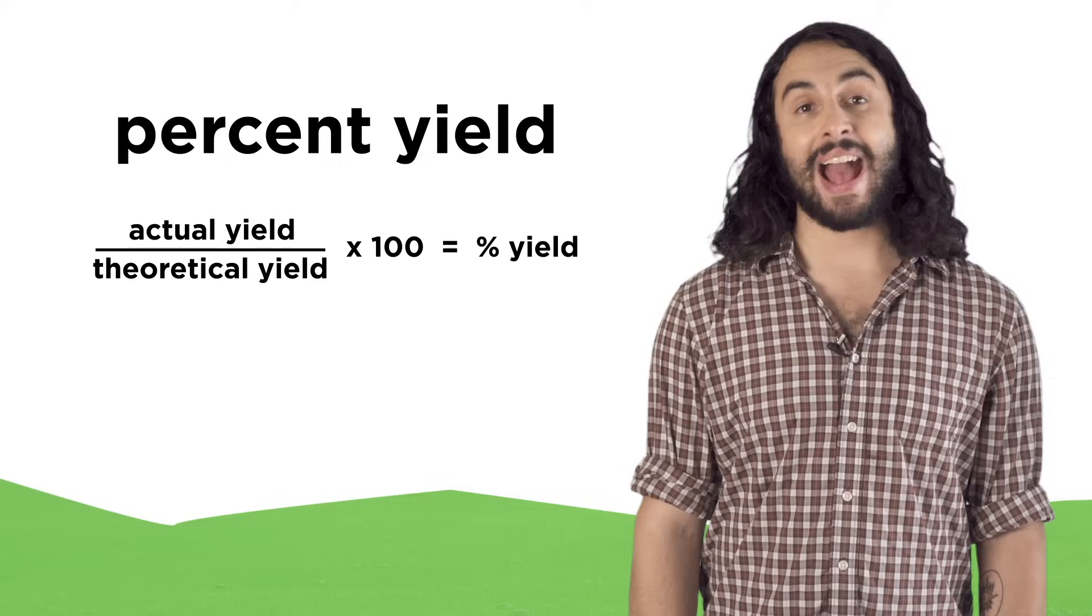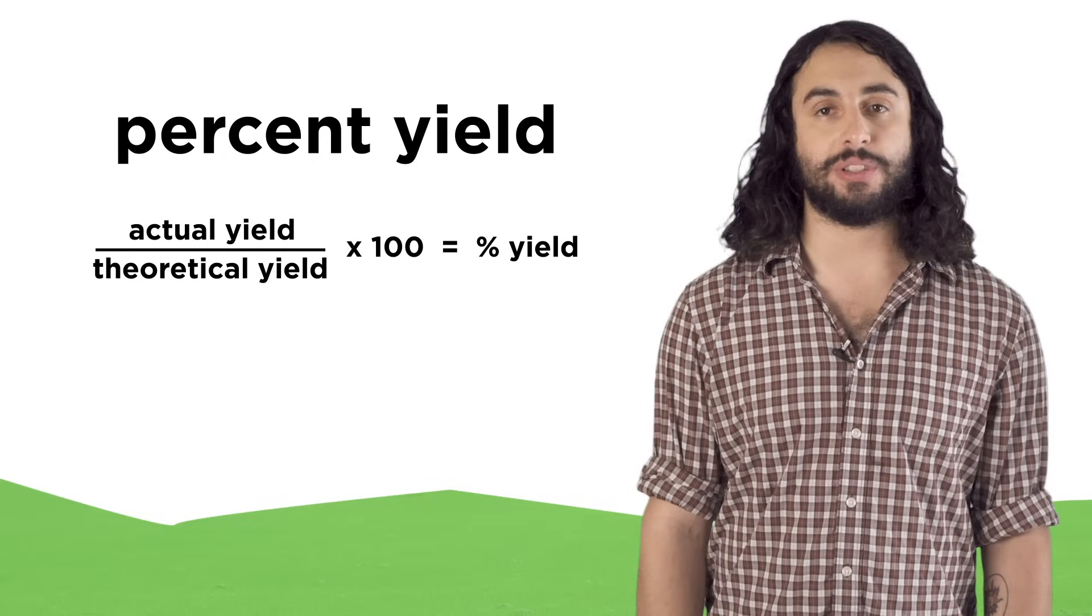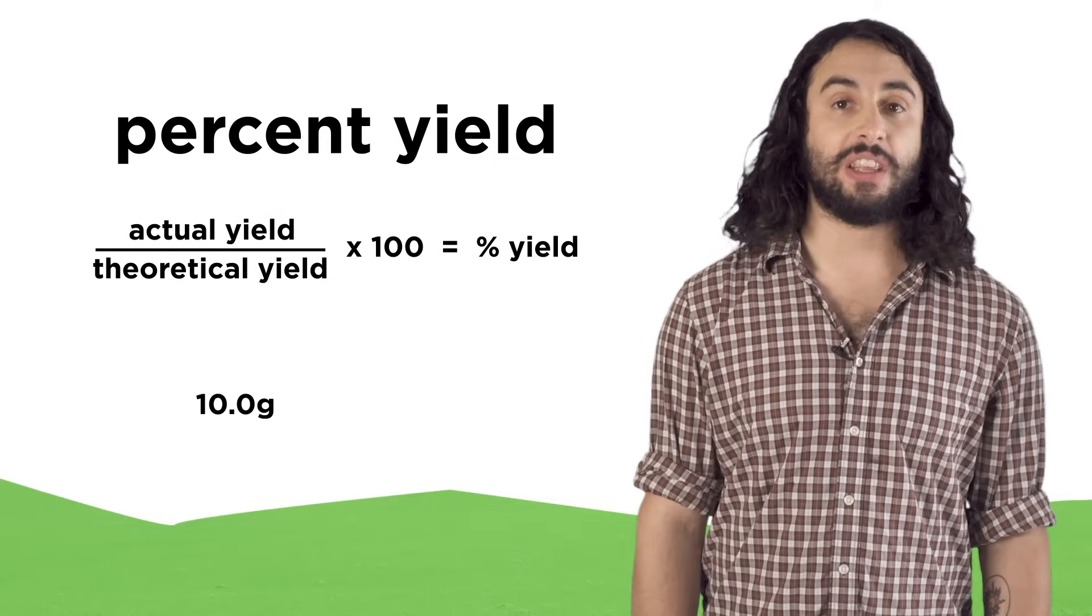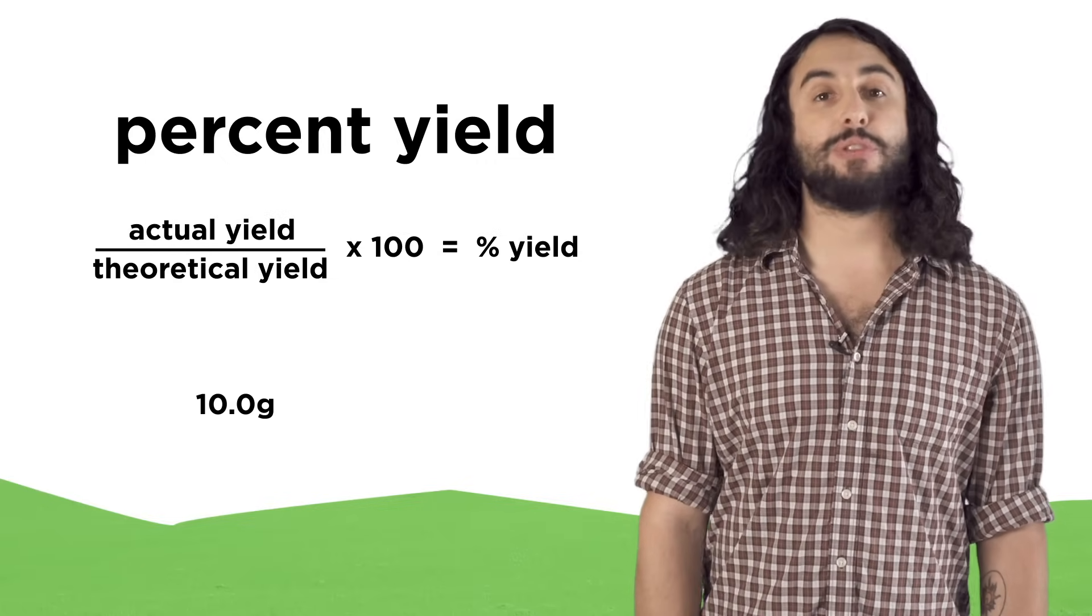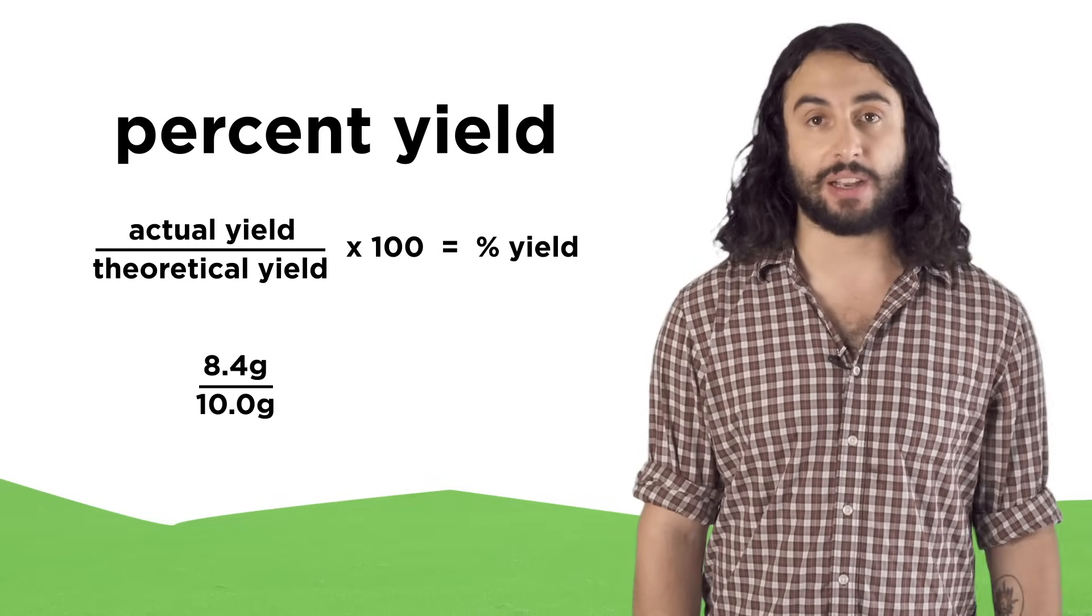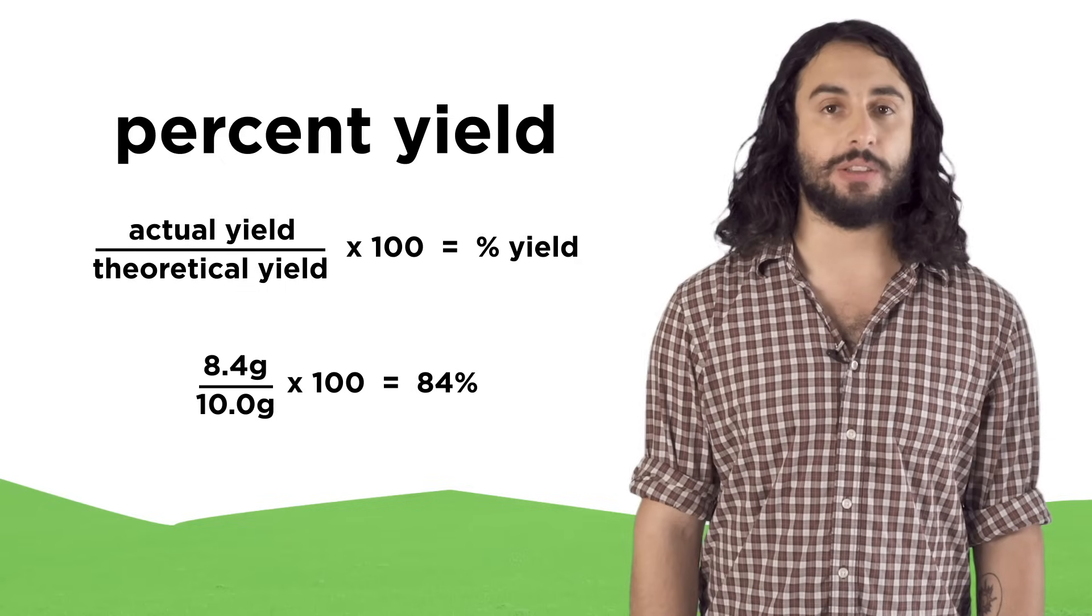Percent yield is actual yield over theoretical yield times one hundred. So if you expected 10 grams of product from your stoichiometric calculations but after doing the experiment only collected 8.4 grams of product, your reaction had an 84 percent yield.